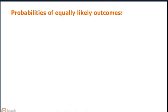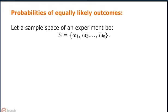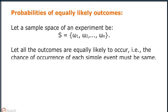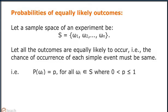Probabilities of equally likely outcomes. Let a sample space of an experiment be S containing omega_1, omega_2 up to omega_n. Let all the outcomes be equally likely to occur. That is, the chance of occurrence of each simple event must be the same. That is, probability of omega_i equals P for all omega_i belonging to S, where P is greater than 0 and less than or equal to 1.